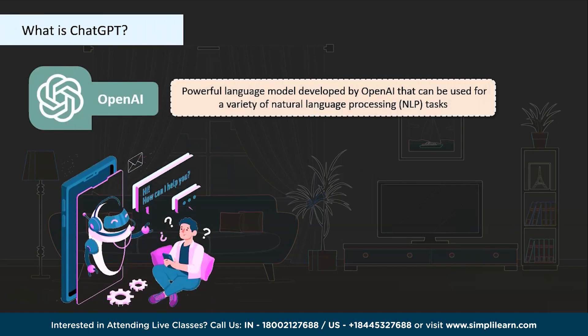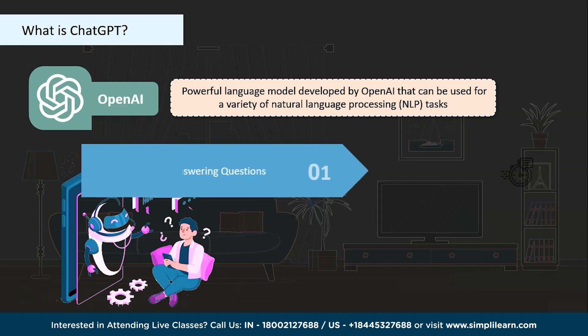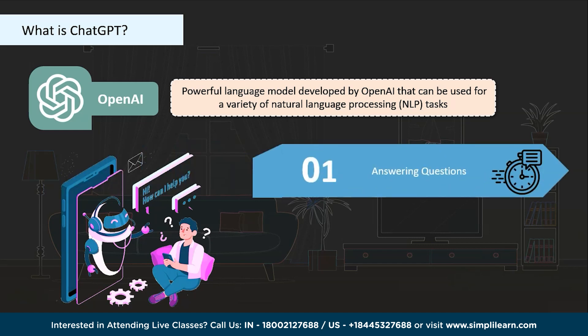Before discussing alternatives, let's understand what ChatGPT is. ChatGPT is a powerful language model developed by OpenAI that can be used for a variety of natural language processing tasks. For example, answering questions — ChatGPT can provide information and answer questions on a wide range of topics including general knowledge, science, technology, history, geography, and much more.